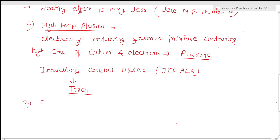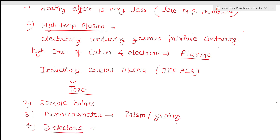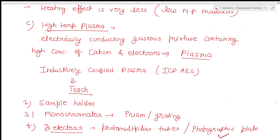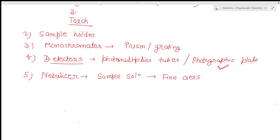The next part of the instrumentation is the sample holder, which is used to introduce the sample. Third is the monochromator, which is needed to select one particular wavelength out of several wavelengths. The monochromator may be either a prism or a grating. The fourth part is the detector, which may be either a photomultiplier tube or a photographic plate — the photographic plate has more advantages over the photomultiplier tube. Besides this, we use the nebulizer to convert the sample solution to a fine aerosol.